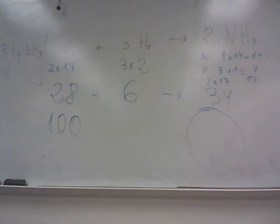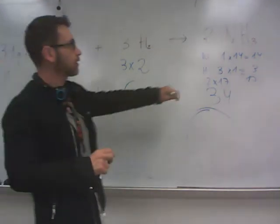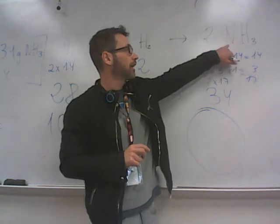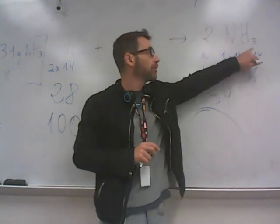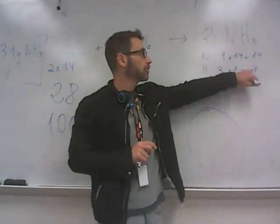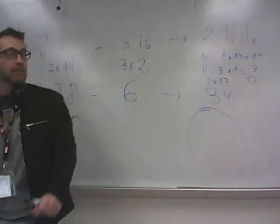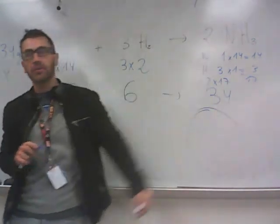Sir, how do you get 34 from here? Which? Ah, 34 is from here. I calculate the molecular mass of ammonia is 1 nitrogen, 14, 3 hydrogen, 3. 14 plus 3 is 17, and 17 times 2 because you have 2 here.